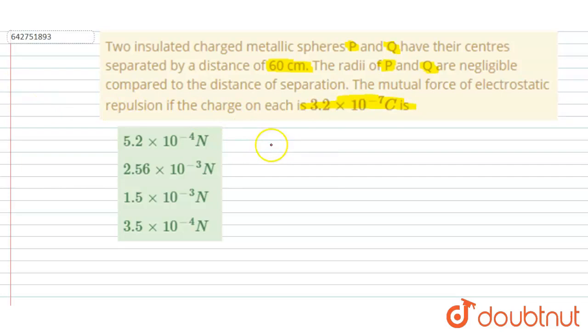If you see, we know from Coulomb's formula that the force between two charges is F equals K q1 q2 by r squared. Here the distance given is 60 centimeters, that is 0.6 meters, and q1 equals q2.